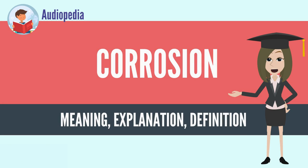Corrosion is a natural process which converts a refined metal to a more chemically stable form, such as its oxide, hydroxide, or sulfide. It is the gradual destruction of materials — usually metals — by chemical and/or electrochemical reaction with their environment. Corrosion engineering is the field dedicated to controlling and stopping corrosion.